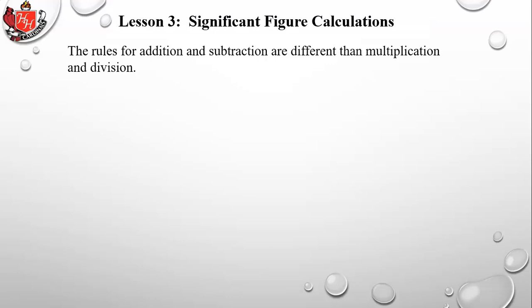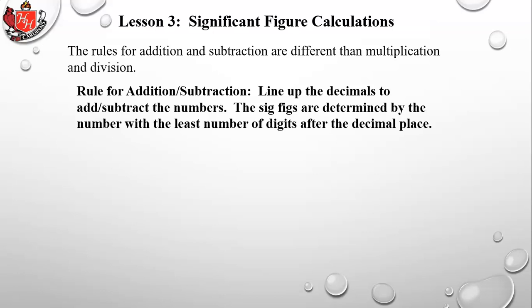The rules for addition and subtraction are different than for multiplication and division. For addition and subtraction, line up the decimals — that's what you do anyway when adding or subtracting decimal numbers. The significant figures are determined by the number with the least number of digits after the decimal place.